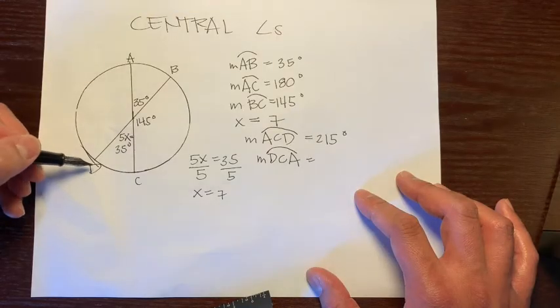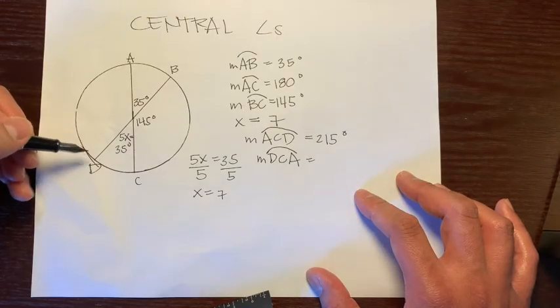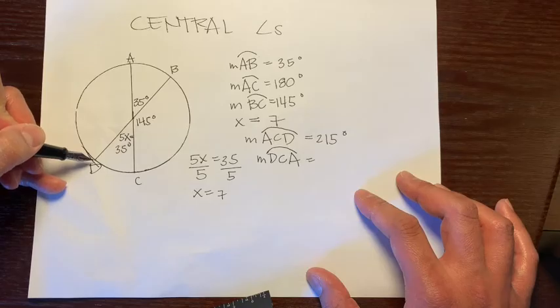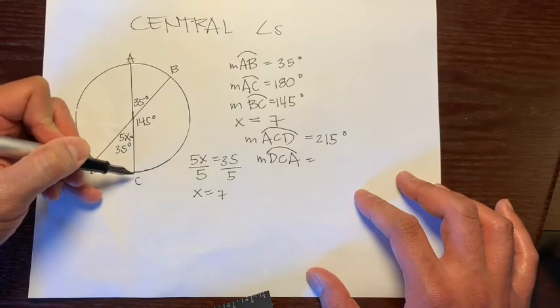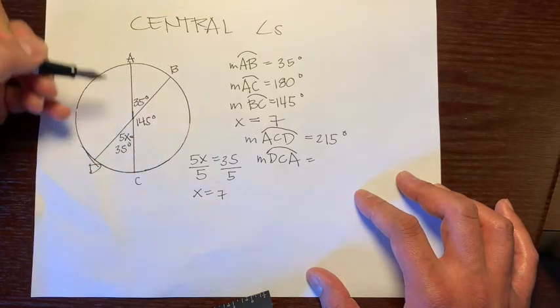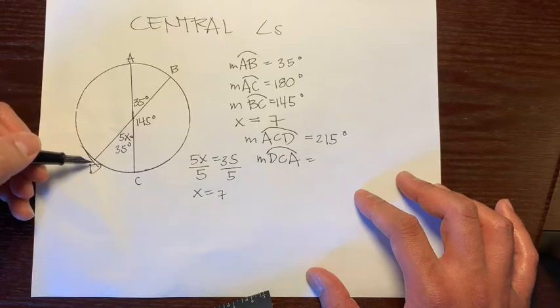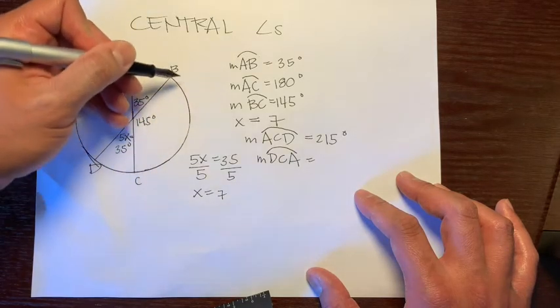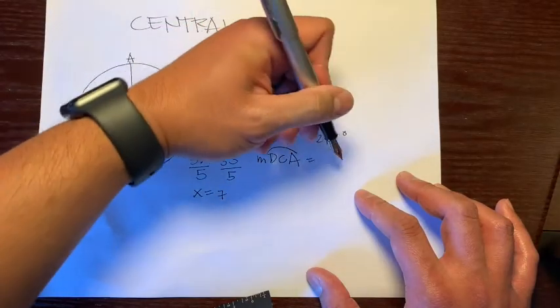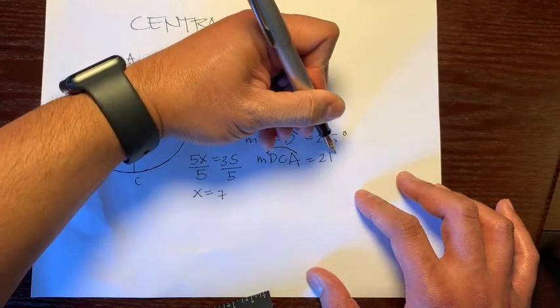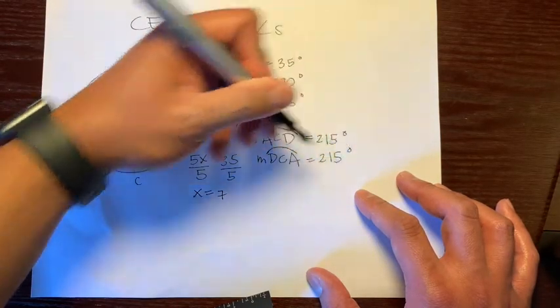We're going to stay in one direction. This time, we're going counterclockwise, because we want to stay in one direction. So we'll go from D to C to A. And it ends up being the same answer because we're going from 35 degrees plus a 145 plus a 35. So that would be 215 degrees.